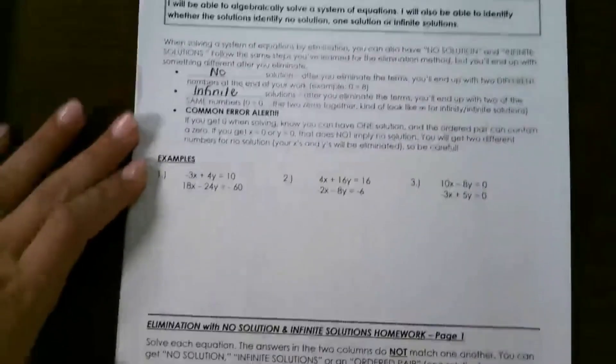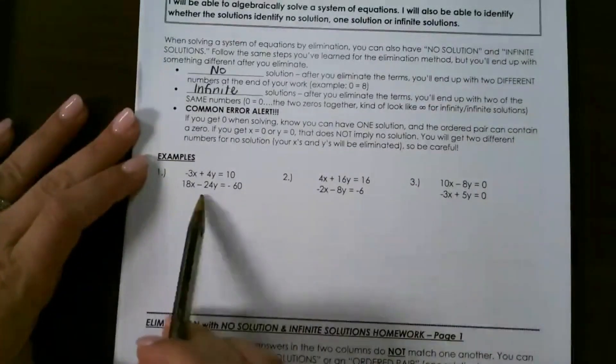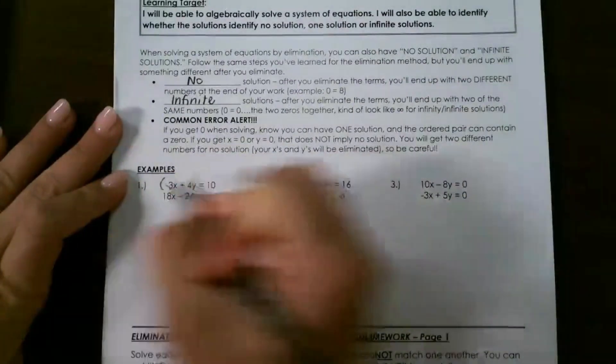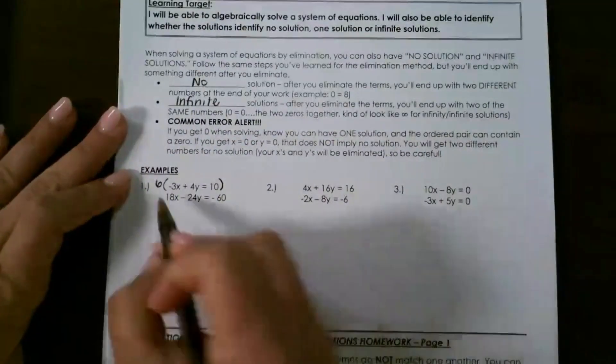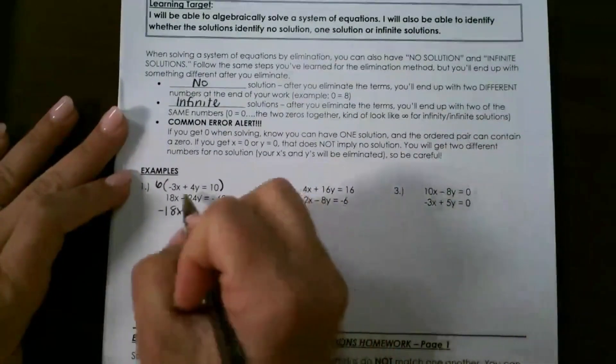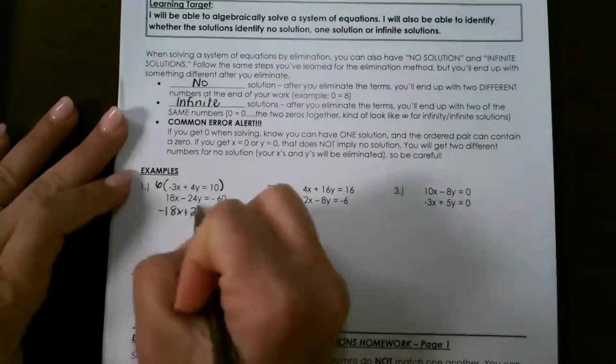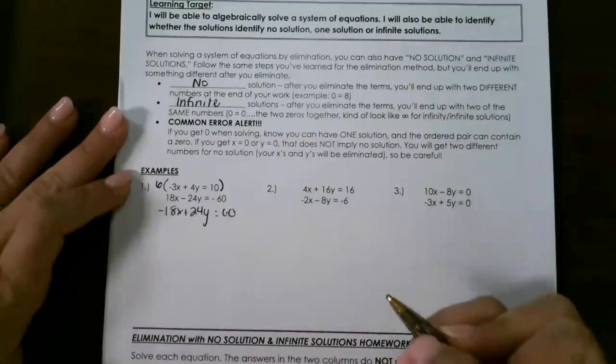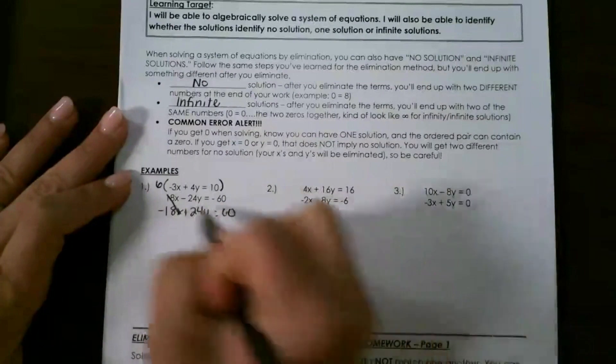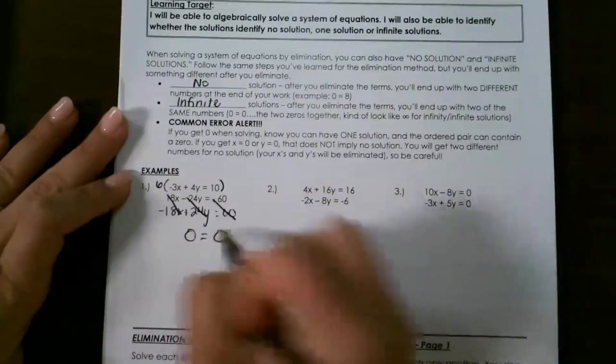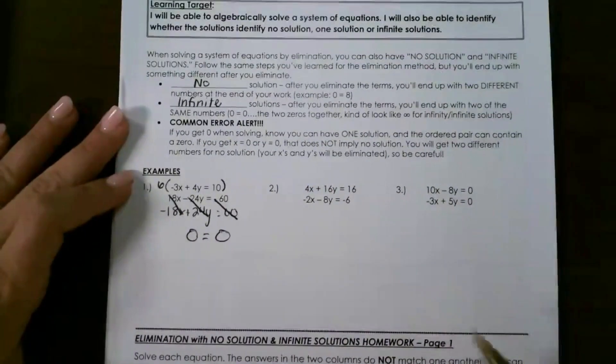Let's look at some examples. For this first one, I need to multiply my first equation by 6 so that I can eliminate. 6 times negative 3 is negative 18x, 6 times 4 is positive 24y, and 6 times 10 is 60. That's going to cause this to cancel out, this to cancel out, and leave me with 0. Those two can cancel out, so that gives me 0 equals 0, which would be infinite solutions.